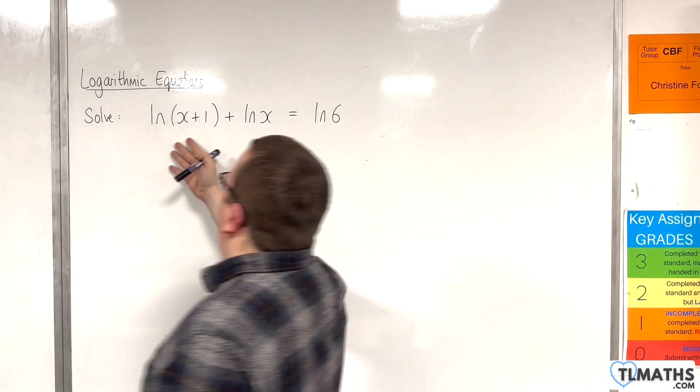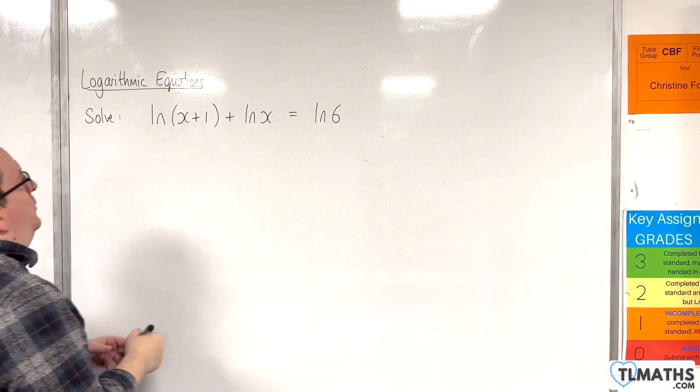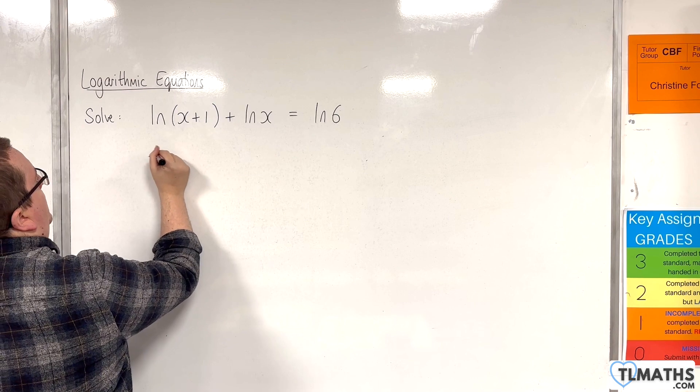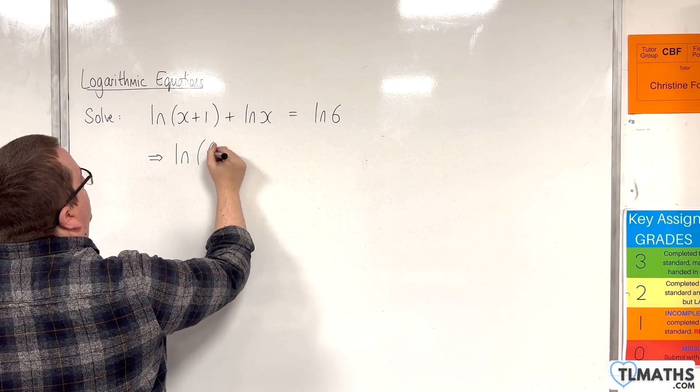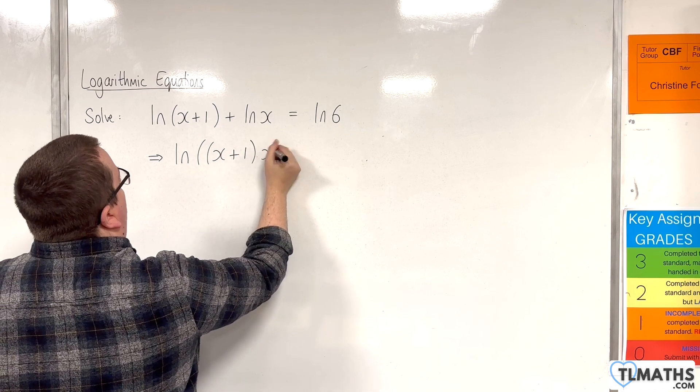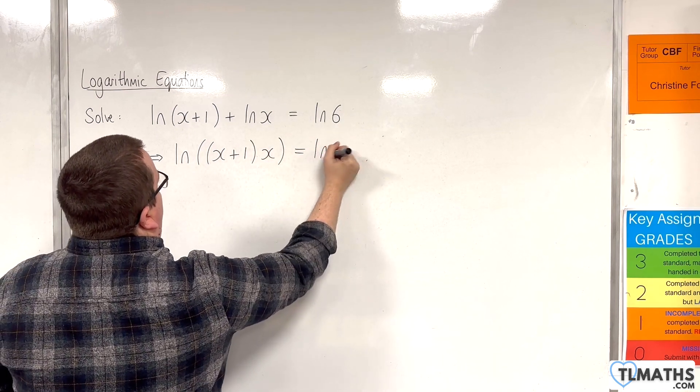Now on the left hand side we can use our product rule to bring those two logs together. We can write that as the natural log of x plus 1 times x, like so, and the right hand side is just the natural log of 6.